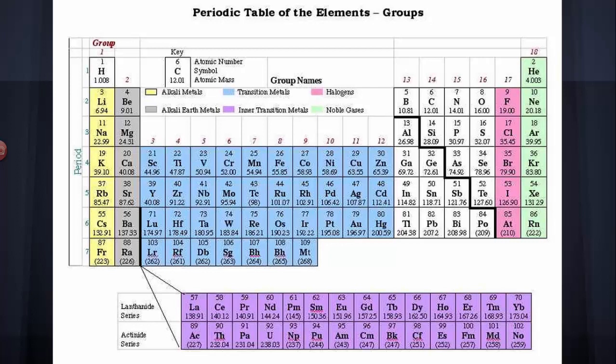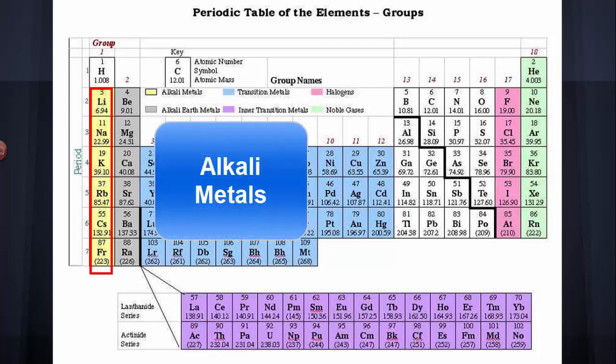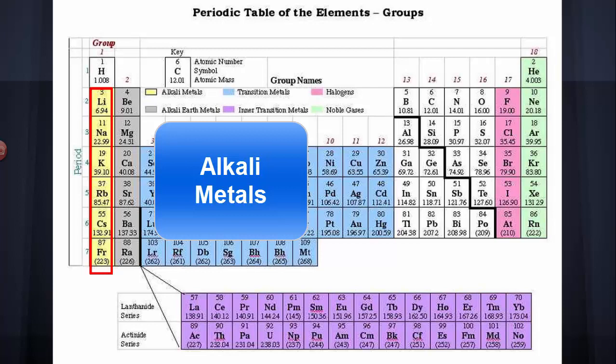The first family you need to be aware of is group number 1, the extreme left of the periodic table, not really including hydrogen. I'm talking about lithium, sodium, potassium, rubidium, cesium, and francium. Those elements are called the alkali metals, and they are very reactive. The most reactive metals on the periodic table are the alkali metals.